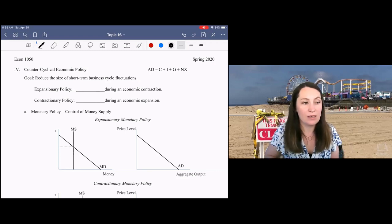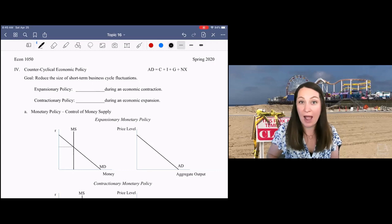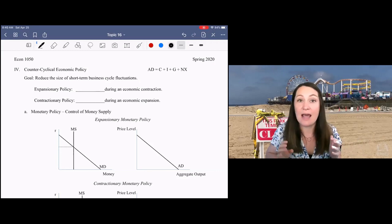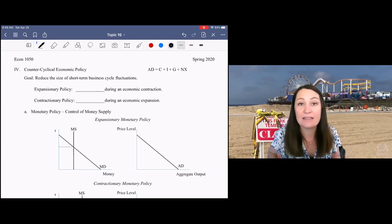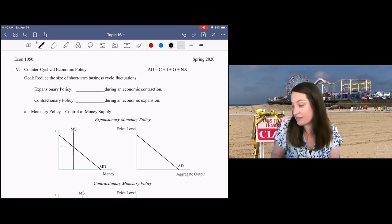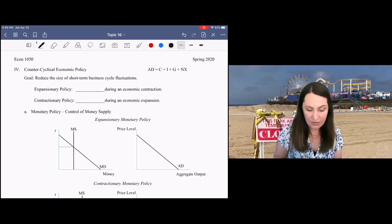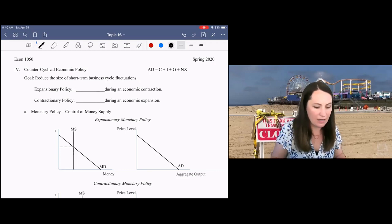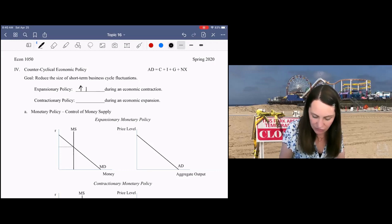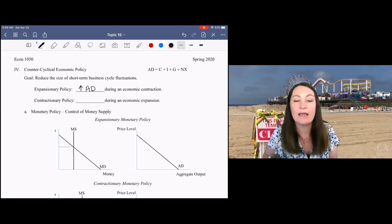In general, in order to counteract the business cycle, the government will adopt policy to push in the opposite direction as the economy is heading. So if the economy is contracting, shrinking like now, we're going to adopt an expansionary policy. We're going to try to expand the economy to counteract the business cycle fluctuation. Expansionary policy would occur during an economic contraction, and what we would be trying to do is to expand or increase aggregate demand.